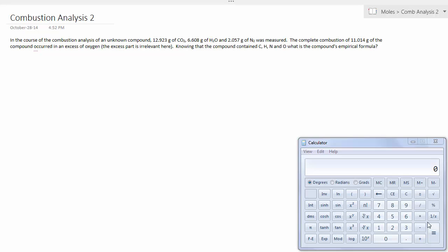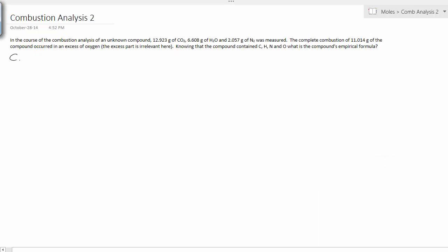Let's have a look at a combustion analysis problem that has more elements than just carbon and hydrogen. In the course of a combustion analysis of an unknown compound, 12.923 grams of carbon dioxide, 6.608 grams of water, and 2.057 grams of nitrogen was measured.